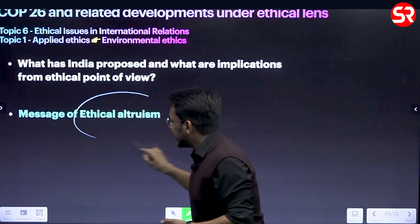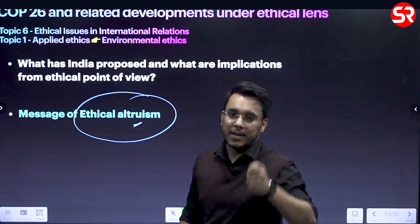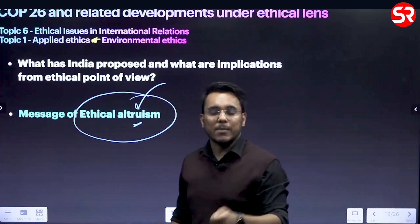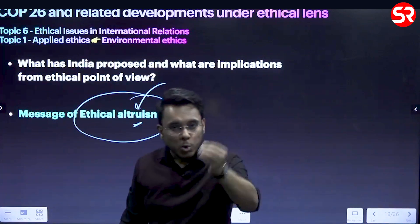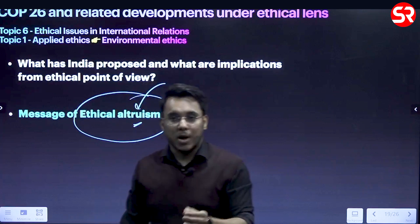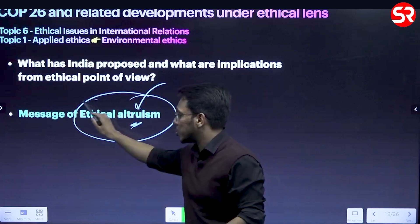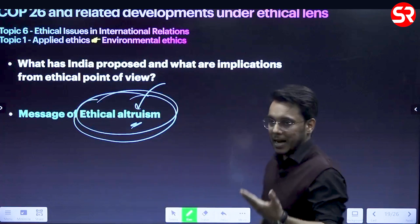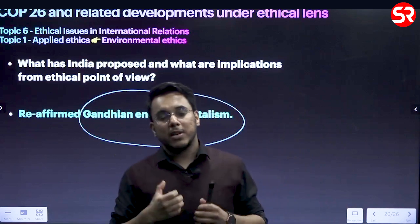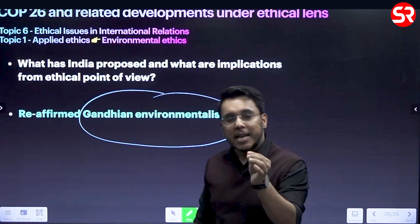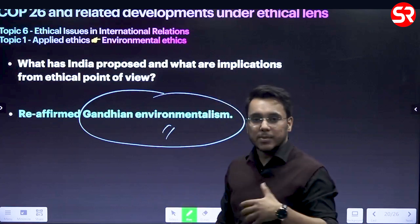Second, a message of ethical altruism has been given - putting oneself at discomfort for the welfare of others. India might put itself in pain, as coal and crude oil are to be phased out and large investments must be made, but for the sake of collective well-being and upholding the value of Vasudhaiva Kutumbakam, India has embraced this altruism. Third, Gandhian environmentalism has been reaffirmed: using environmental resources in a more responsible and sustainable manner.